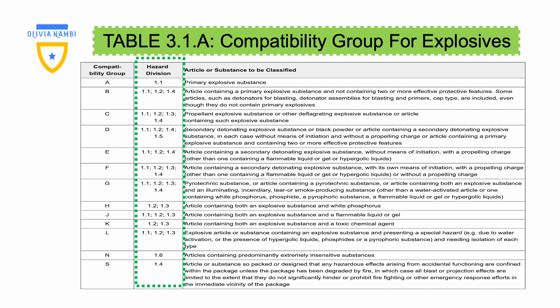The second column gives us hazard divisions. It illustrates how many hazard divisions belong to a particular compatibility group. For example, in compatibility group A, we have only one hazard division, which is 1.1.